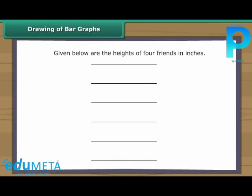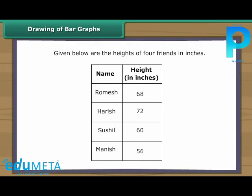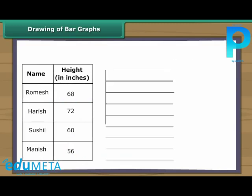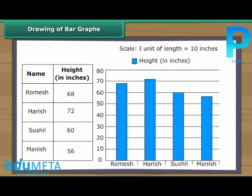Drawing of bar graphs. Let us now draw a bar graph with the help of the given data. As the heights are concentrated near 60, we measure 10 inches per unit of length. Now let us draw vertical bars. The height of the bars is decided by the heights of the boys in inches — the taller the boys, the taller the bars.